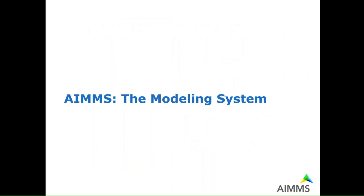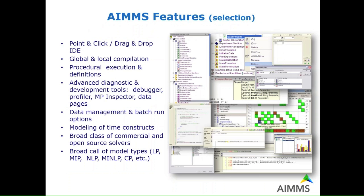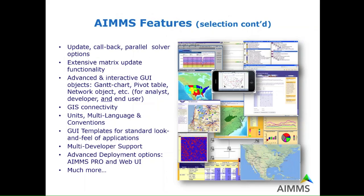A few words about the AIMMS modeling system for people who are not yet familiar. The system has mainly three parts: model building parts, on top of that a graphical user interface, and underneath we have the links to all popular solvers. AIMMS has an integrated development environment which provides tools not only to formulate your model but also to manage your model and all kind of information around it. AIMMS provides both a Windows user interface and a web user interface where inputs and outputs of your optimization model can be visualized.